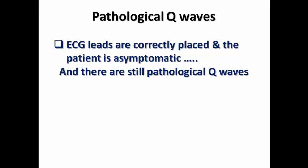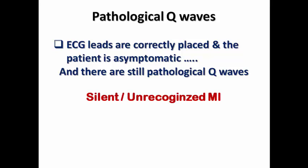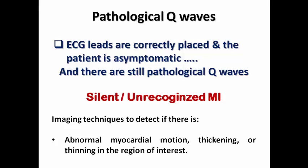If after correct lead placement the patient still has pathological Q-waves but denies any symptoms, I am faced with the diagnosis of silent or unrecognized MI. In this case, imaging techniques such as echocardiography, myocardial perfusion scan, or cardiac MRI are needed to look for abnormal myocardial motion, thickening, or thinning in the region of interest. For instance, with pathological Q-waves in inferior leads, I would focus on the inferior wall. If the patient denies any recent acute coronary syndrome or coronary stenting, I would assume silent or unrecognized MI.